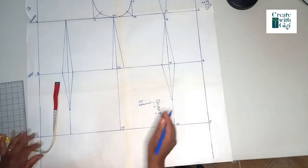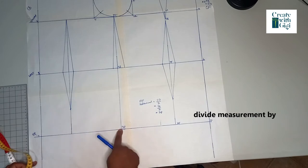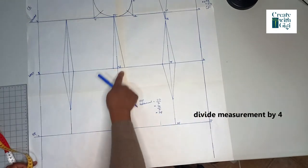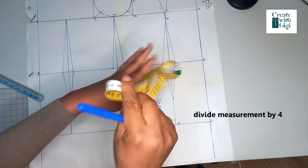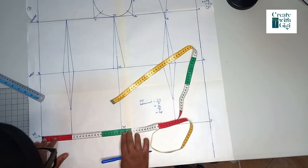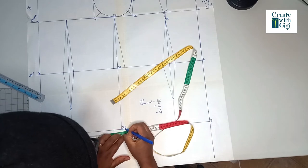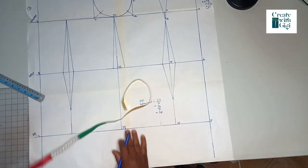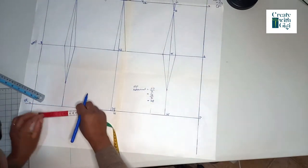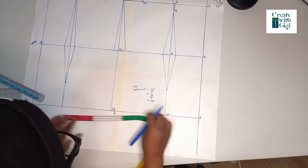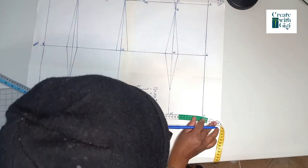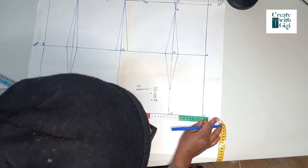For the side seam, you're going to divide the hip measurement into four and then mark out on your paper where this lies. For this measurement, I got 28, so I'm marking at 28 from the center back towards the side seam, and from the center front towards the side seam, another 28 centimeters.